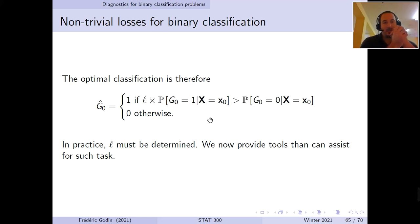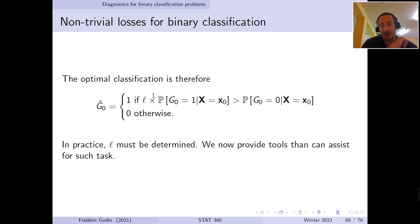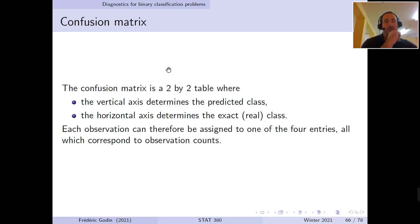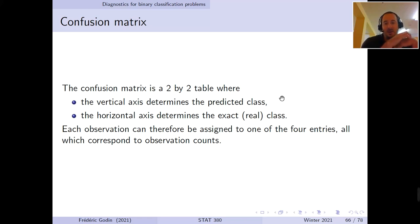This gives our classification rule, but one thing remains unspecified: the cost L of misclassifying a high-risk observation. In practice, we need to assign a value for this cost. To assist with these choices, we now provide two tools. The first tool is called a confusion matrix — a 2×2 table where the vertical axis represents the predicted class, and the horizontal axis represents the real class of an observation.